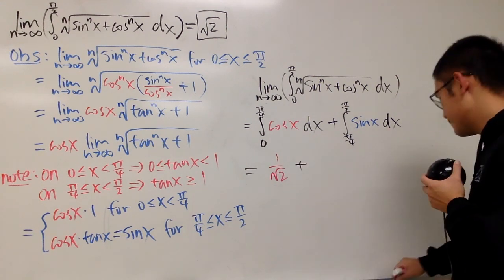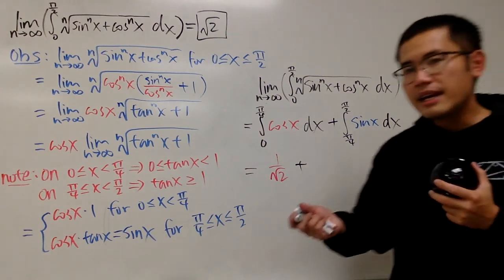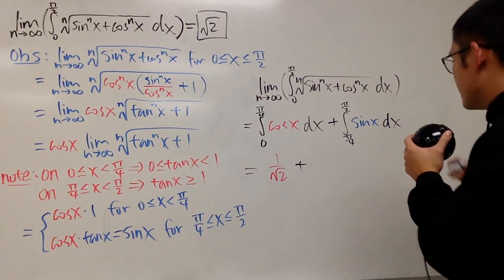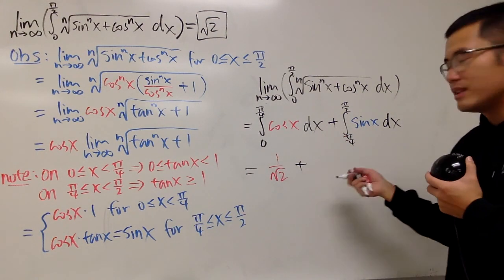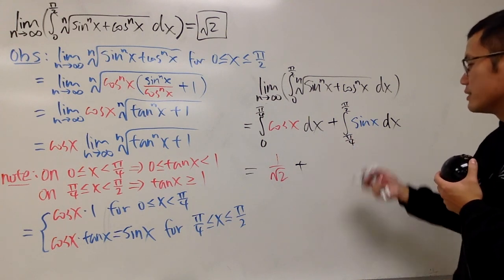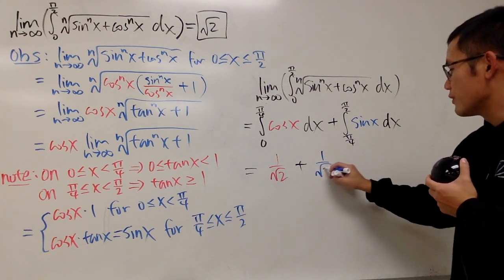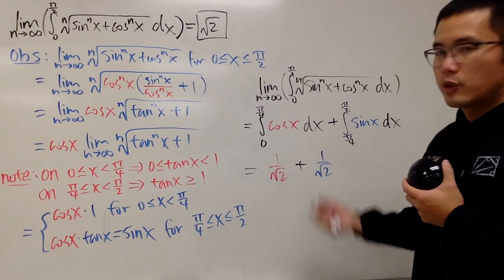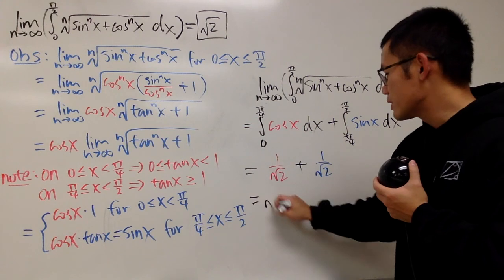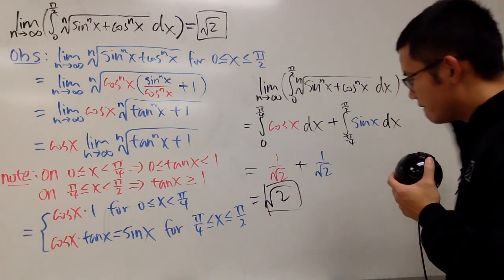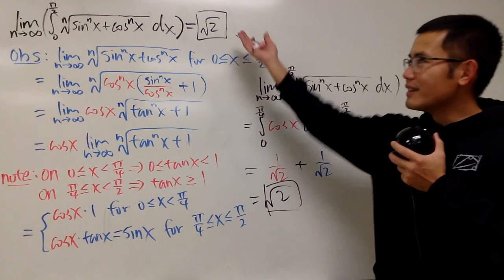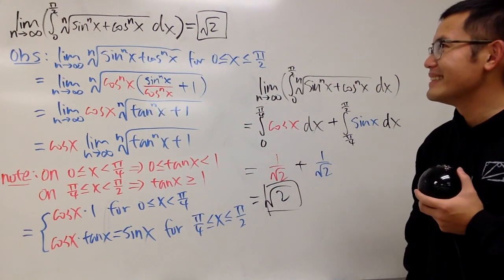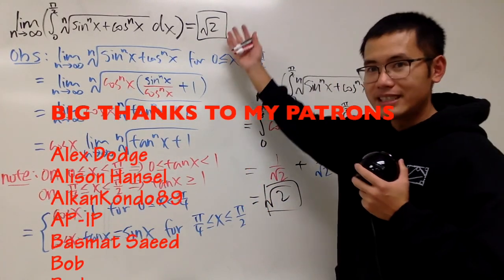For the second piece, we integrate sin(x) from π/4 to π/2. Integrating sine gives negative cosine. Evaluating at π/2 gives 0, and at π/4 gives cos(π/4) = 1/√2; with the minus-minus it's positive. So the second piece is also 1/√2. Adding them up: 1/√2 + 1/√2 = 2/√2 = √2. That's the answer to this limit and integral question. Very nice!